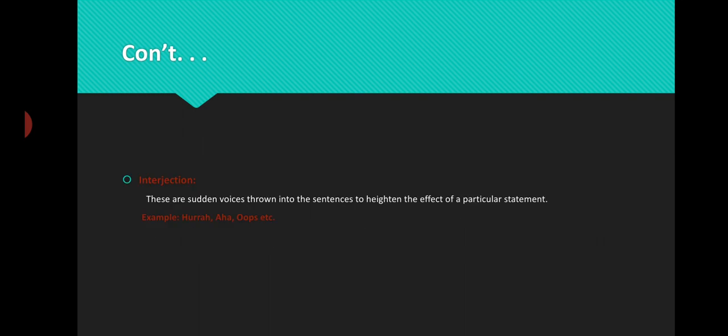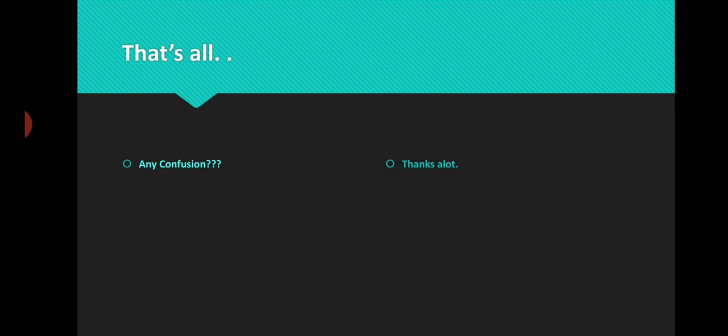Last but not least is interjection. Interjections are words — rather, expressions — which may not have any grammatical standing or grammatical meaning, but they are sounds or words thrown into sentences or statements just to express a certain feeling. For example: hurrah, aha, oops, alas, etc. So these are a sort of expressions. That's all — this is the simple introduction of your parts of speech.